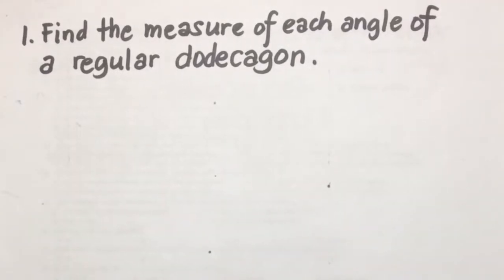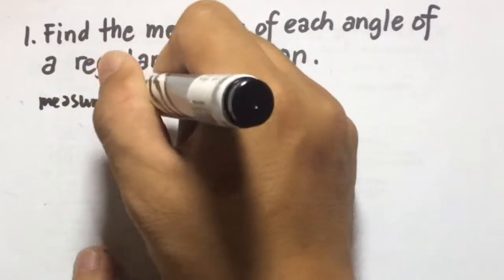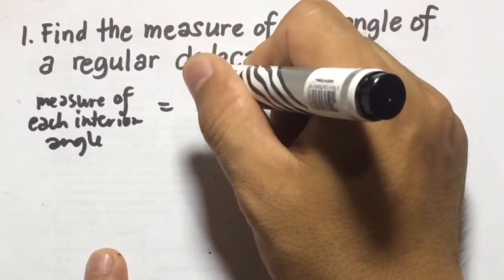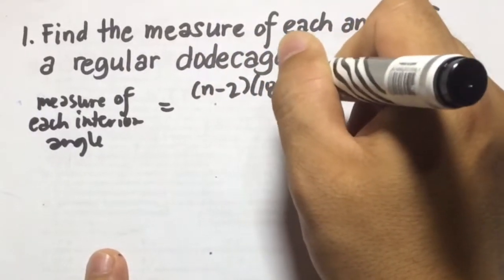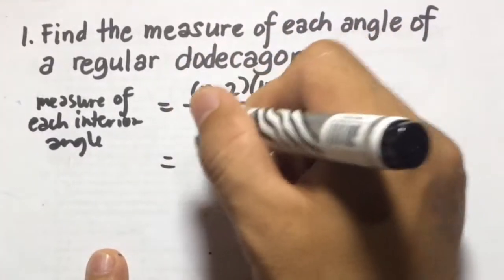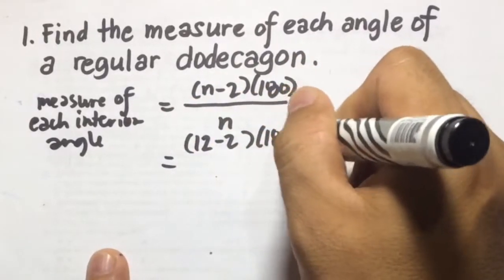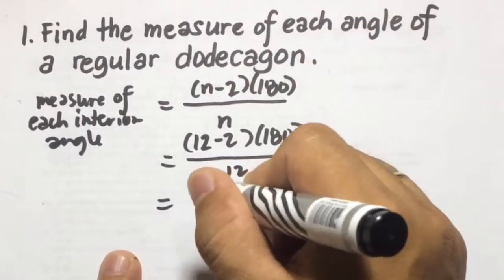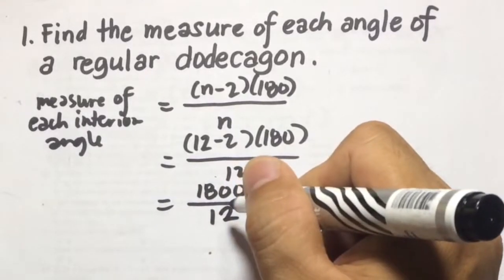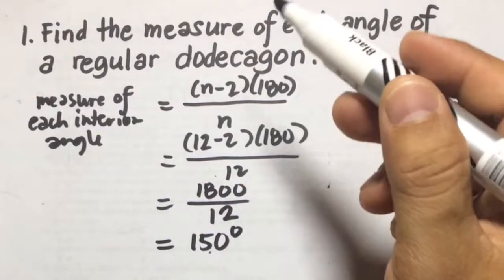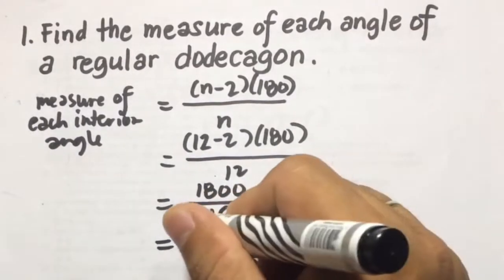Example number 1: Find the measure of each interior angle of a regular dodecagon. We divide (n minus 2) times 180 by n. A dodecagon has 12 sides, so we have (12 minus 2) times 180 divided by 12. That is 10 times 180 equals 1800, divided by 12, which equals 150 degrees. So each interior angle of a regular dodecagon measures 150 degrees.